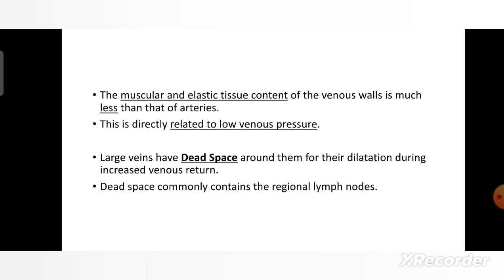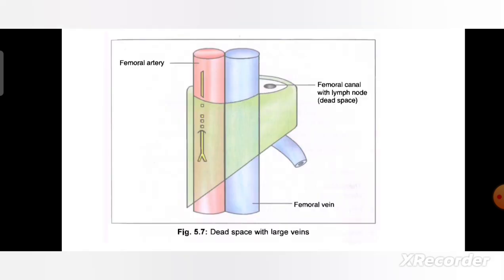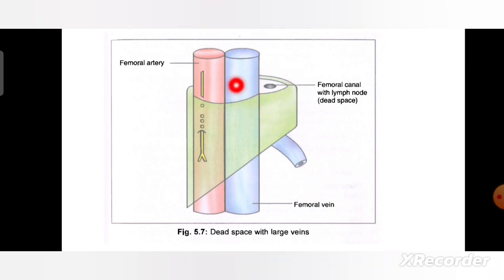The dead space commonly contains the regional lymph node. As this figure represents, the dead space is associated with large veins — red shows the femoral artery and blue shows the femoral vein. This area is known as the dead space, which is contained by the femoral canal with lymph node.